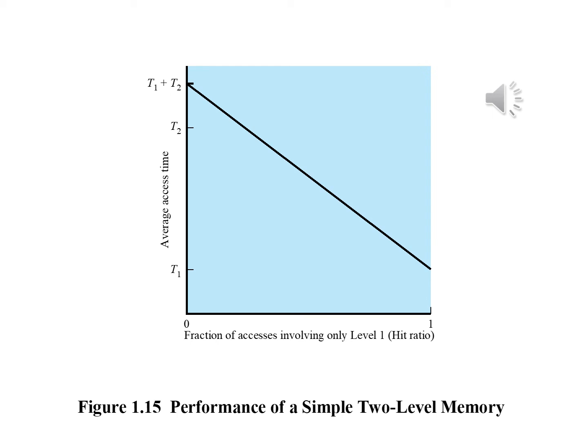The result is close to the access time of the faster memory. So the strategy of using two memory levels works in principle, but only if the four conditions we discussed before apply. By employing a variety of technologies, a spectrum of memory systems exist that satisfy the first three conditions. Fortunately, the fourth condition — that decreasing frequency of access to the memory by the processor — is also generally valid.